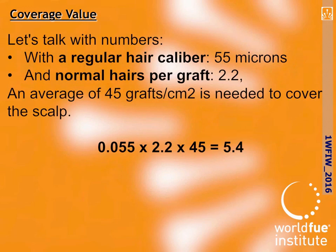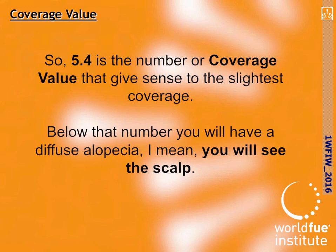Let's talk with numbers. With a regular hair caliber of 55 microns (0.055 millimeters), a normal hairs-per-graft of 2.2, and an average of 45 grafts per square centimeter needed to cover the scalp: 0.055 multiplied by 2.2 multiplied by 45 equals 5.4. So 5.4 is the coverage value that gives sense to the slightest coverage. Below that number you will have a diffuse alopecia — you will see the scalp.